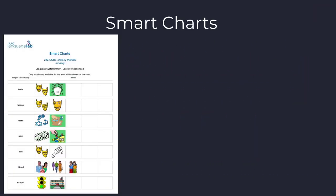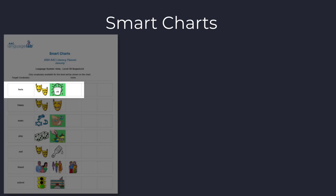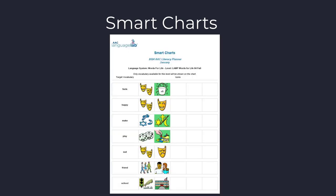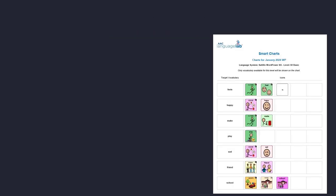Download a smart chart that supports your vocabulary. A smart chart shows the symbol sequence for the target words in the vocabularies. Use it as a tool to help communication partners know where to find words in the vocabulary. You can download a pre-made smart chart for Unity, Lamp Words for Life, and Word Power for each monthly set of target words.